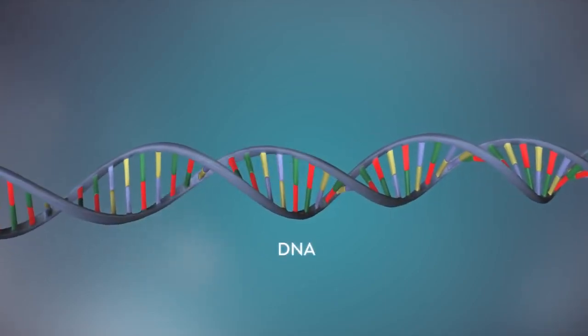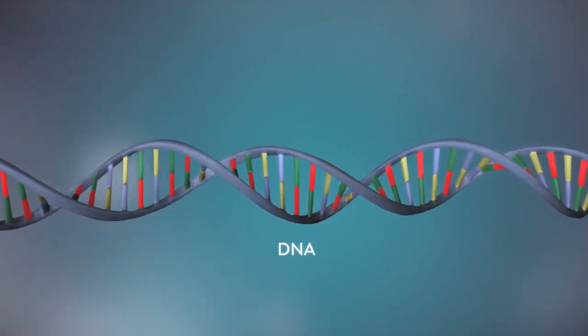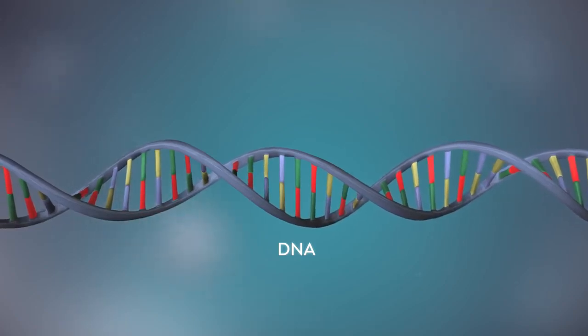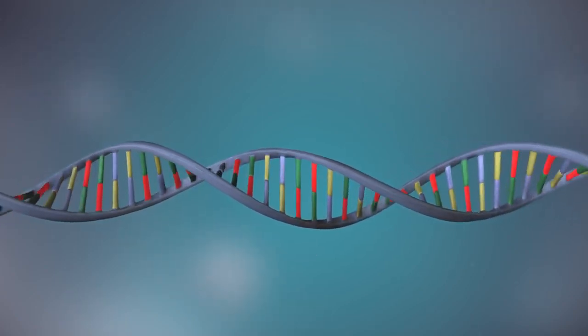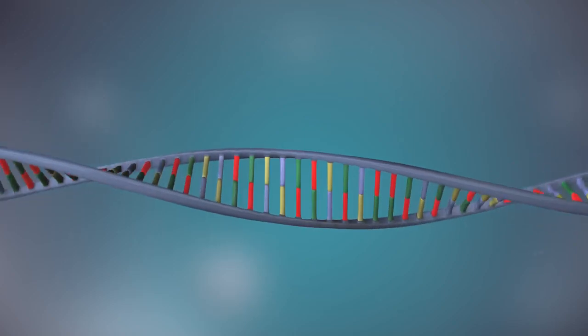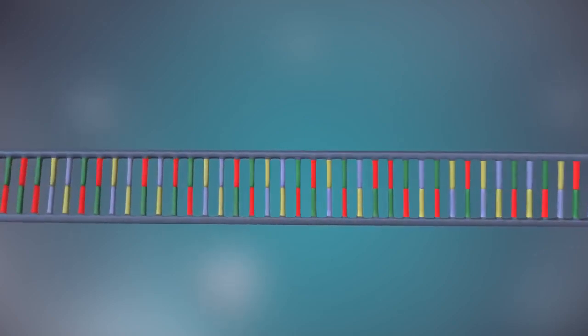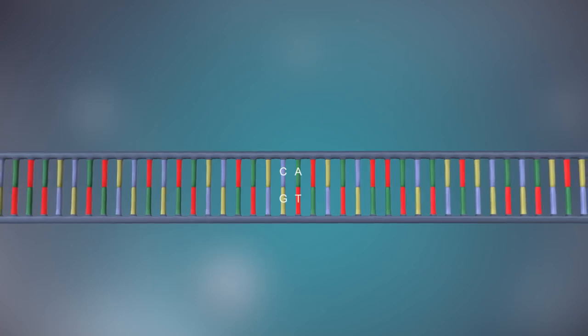DNA is a molecule made up of two strands, twisted around each other in a double helix shape. Each strand is made up of a sequence of four chemical bases, represented by the letters A, C, G and T.